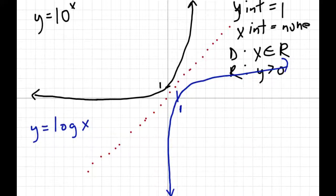So for the log graph, you can see that now there is no y-intercepts, so our y-intercepts, there's none, and our x-intercepts, we have one of them, and in this case it's at one. So you can see it's just the reverse of the exponential one,